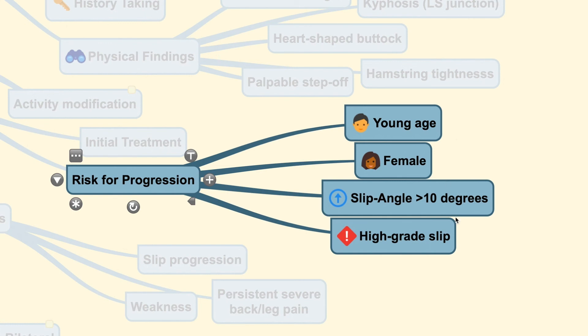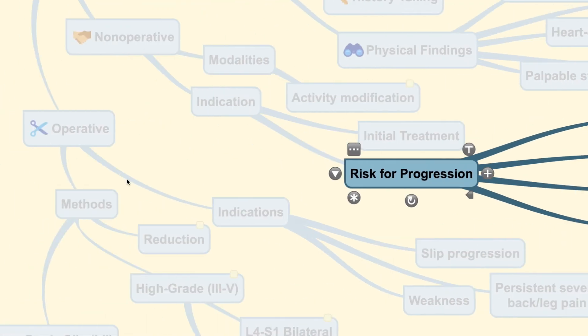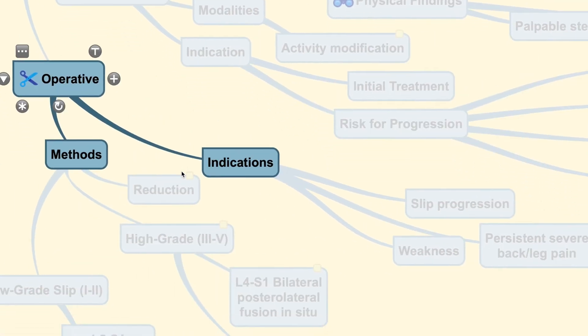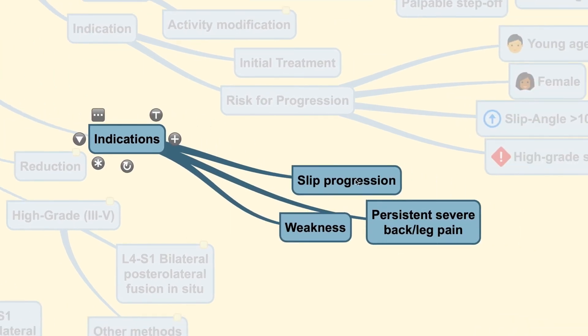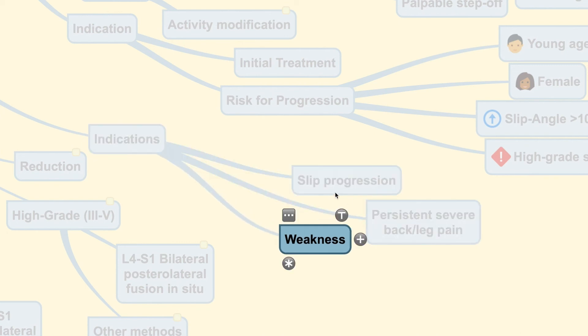Now operatively, patients could also be treated but the indication must include the evidence of a slip progression which is objectively proven by measurements of the slip angle, the forward slippage percentage by Taylor method during consecutive visits to the doctors and the patient may have persistent severe back or leg pain along with weakness of the muscles.